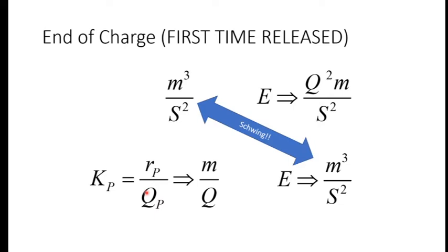Not that we're going to eliminate charge from the equations entirely, because until we know what the shape of a pre-ton is, we're probably going to hold on to charge for a little bit longer. But we're now very sure that charge is nothing more than the shape of a pre-ton, and the charge correlates to the radius.